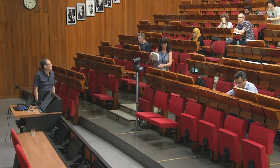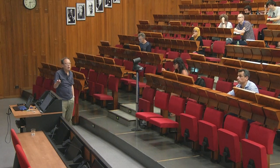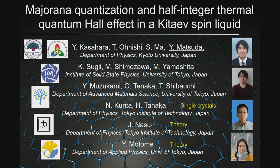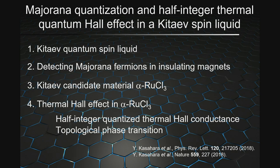I'd like to thank the organizers for inviting me to this workshop. Today I'd like to talk about Majorana fermions and quantum Hall phenomena in quantum magnets. The main players of this work are Kasahara, Onishi, and colleagues at the University of Tokyo, in collaboration with Takagi-Bachi's group. Single crystals were grown by Tanaka's group at Tokyo Institute of Technology, and Nasu and Motome provided important theoretical suggestions. In my talk, I'll start with the Kitaev quantum spin liquid, then discuss detecting Majorana fermions in insulating magnets, the candidate material alpha-RuCl3, the thermal Hall effect, and in particular the half-integer quantized thermal Hall conductance and topological phase transition.